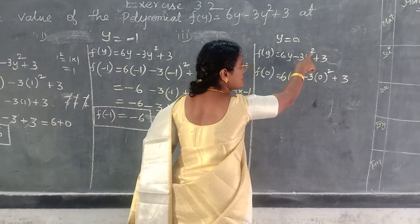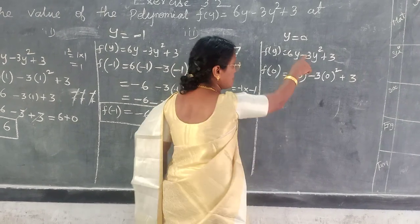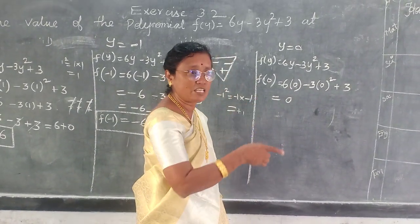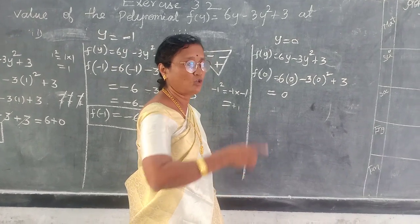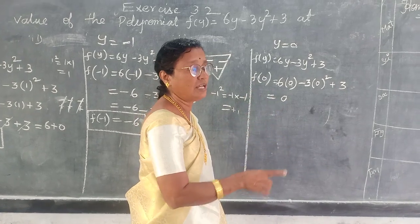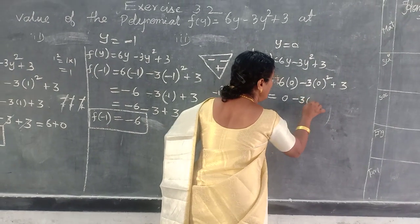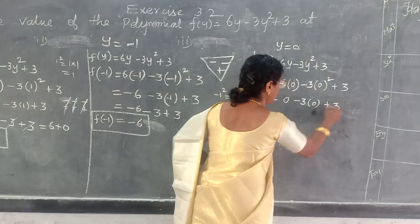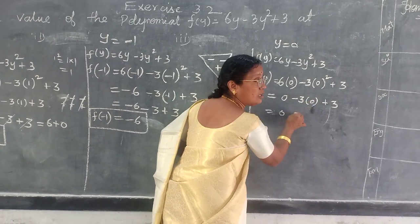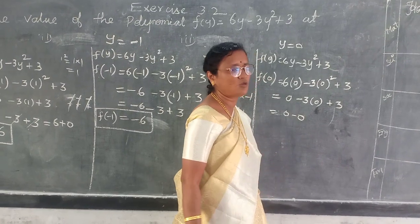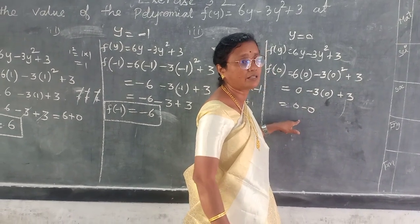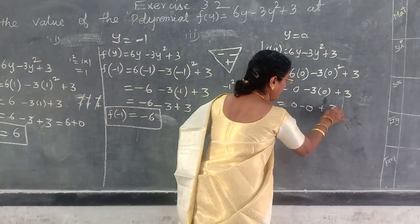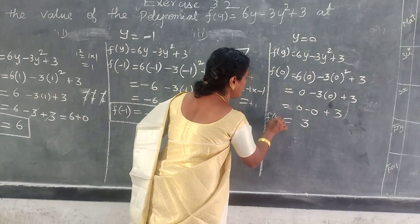6 into 0 is 0. Anything multiplied by 0 is 0. Next one is minus 3 into 0 — 0 squared means 0. Here, plus or minus is not considered, but since it is given minus you are writing it. So minus 0, minus 0, plus 3. What is the answer? 3. F of 0 equal to 3. Do you follow?